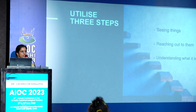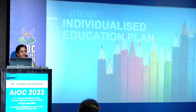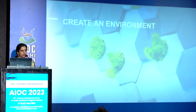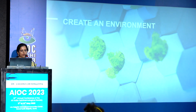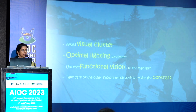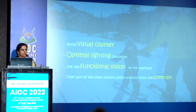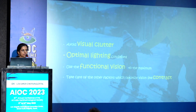With these behaviors in mind — the child has to see, reach out to the object, and then understand what the object is for — we create an individualized education plan. Before putting this into action, we need to create an appropriate environment. The room should be devoid of visual clutter, lighting conditions need to be optimum, and the child's functional vision, color, and contrast sensitivity all have to be taken into account and utilized to the maximum.